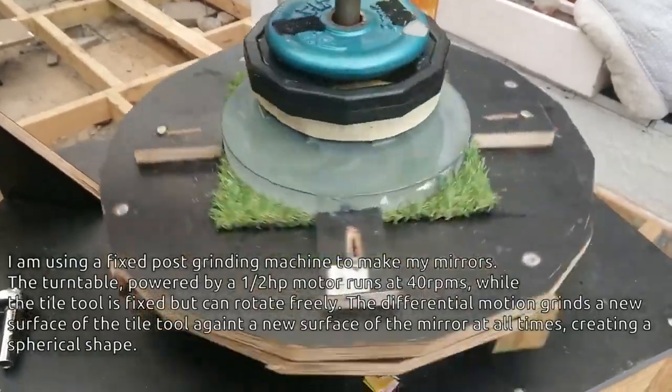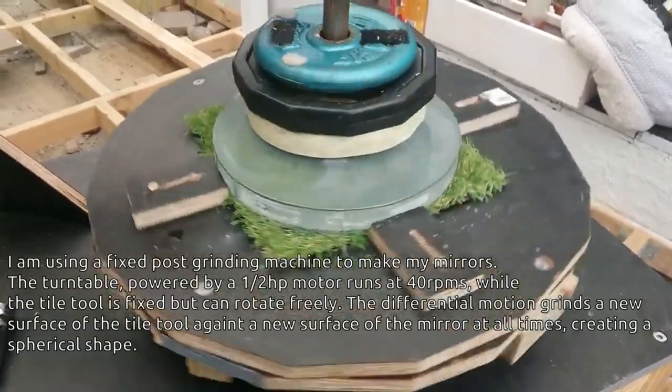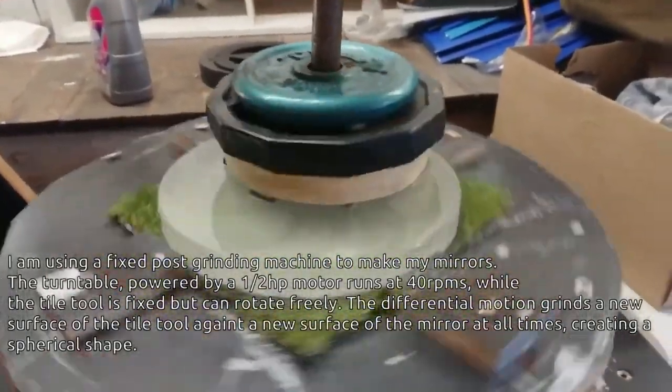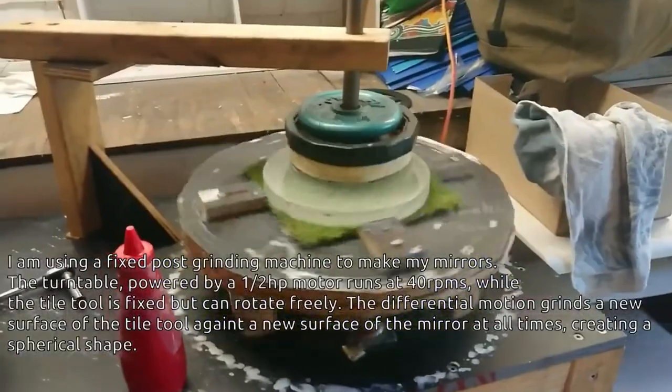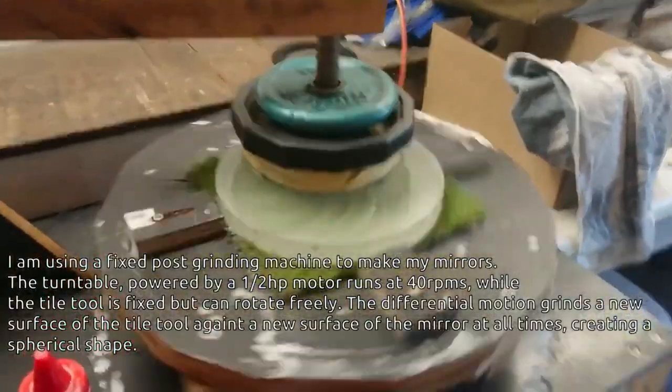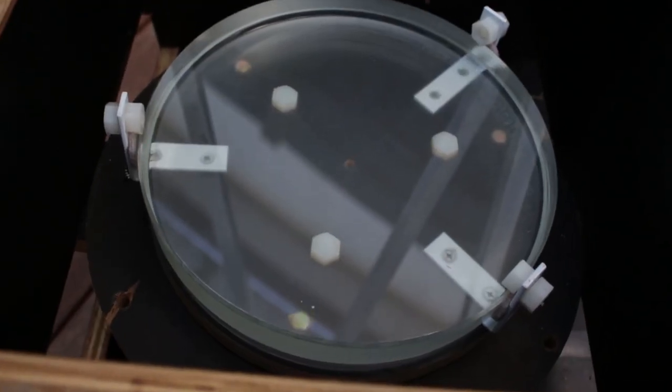From there, you have to progressively grind it finer and finer, with more fine carborundum grits. And the way you do that is using a tile tool, so a tool basically made out of porcelain, that will grind against the surface of the glass. As porcelain is harder than glass, it will remove material easier.